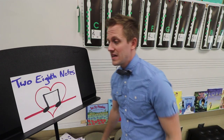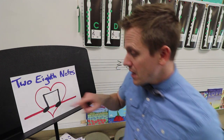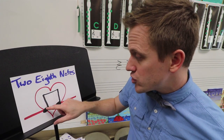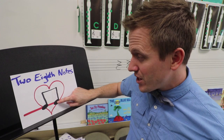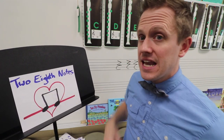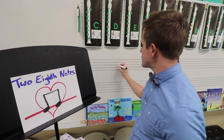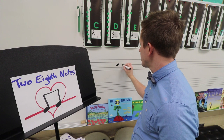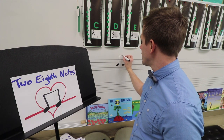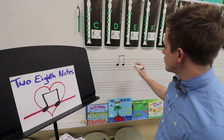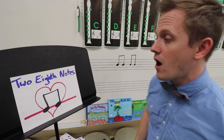Our next rhythm is two eighth notes. Two eighth notes are shorter rhythms — in fact, they're short enough that you can fit two of them inside of one beat. The note head refers to the note, so if you have two note heads, that means you have two notes. Don't get confused and think this is just one note — it's two notes, but they are connected. When you draw it on your paper, I like to start with the note heads, then draw the stems, and connect them with one bar. The bar is the horizontal line on top.